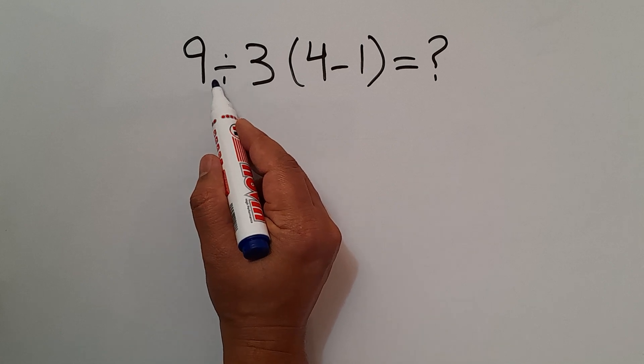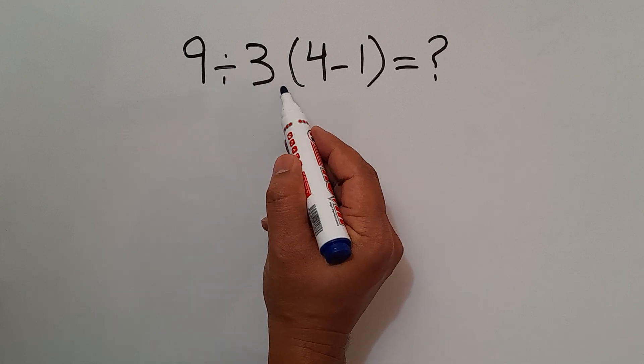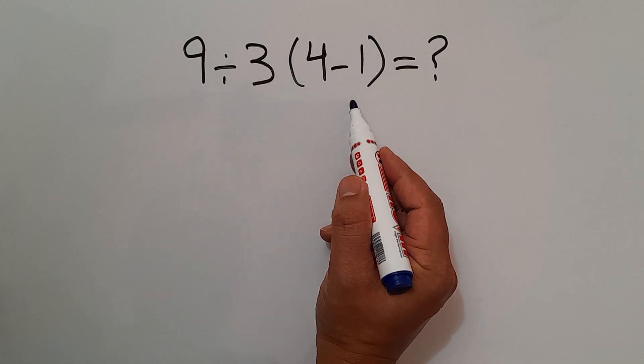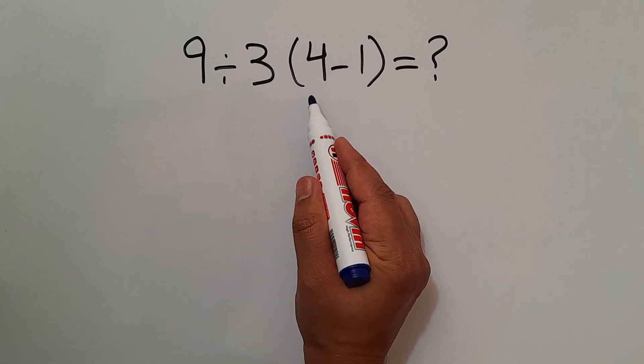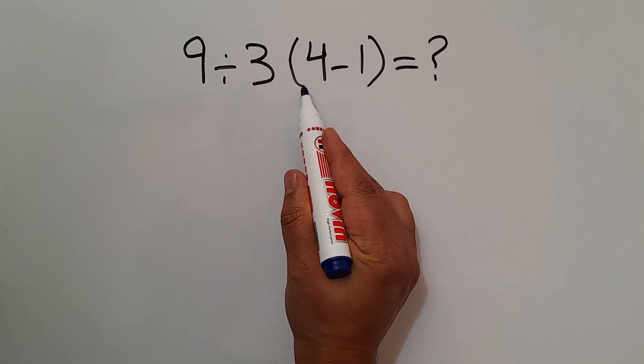In this expression we have one division, one multiplication, and these parentheses. According to the order of operations, parentheses has higher priority than other operations. So first we have to handle these parentheses.